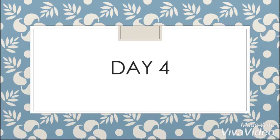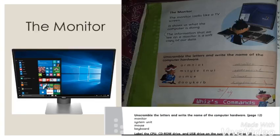Therefore, we are going to discuss each hardware device separately and why they are used. So our first device is monitor. The monitor looks like a TV and it shows us what computer is doing. The information that we see on computer is called soft copy.